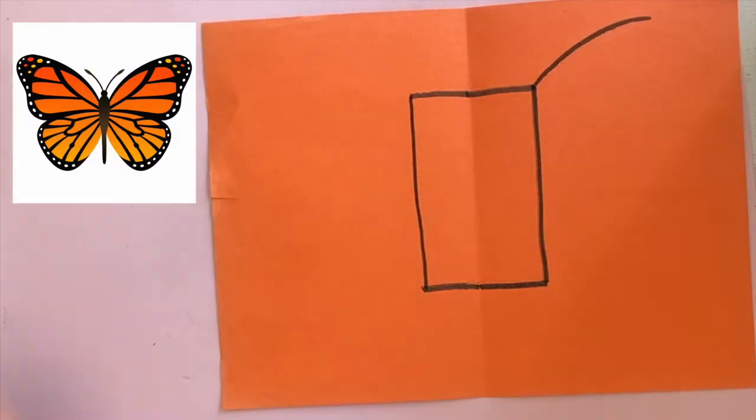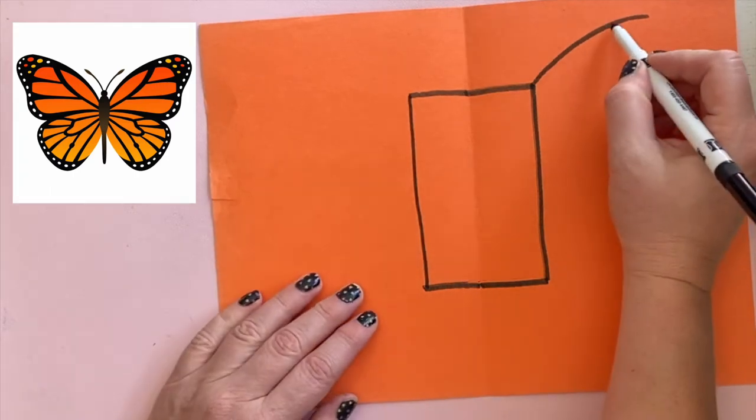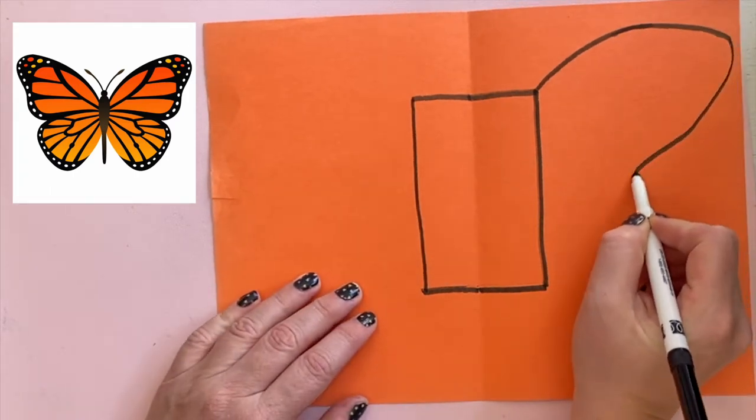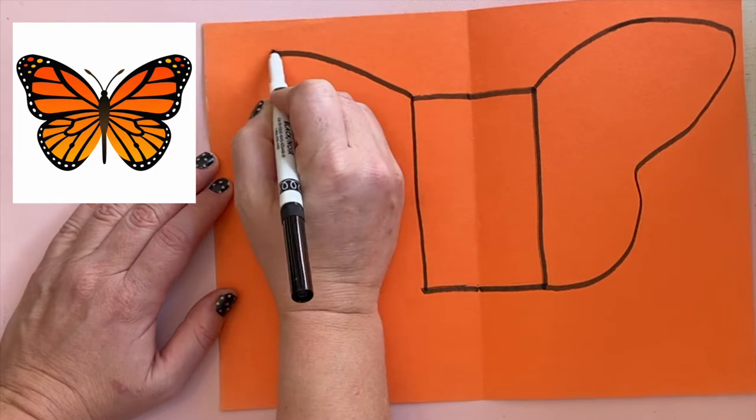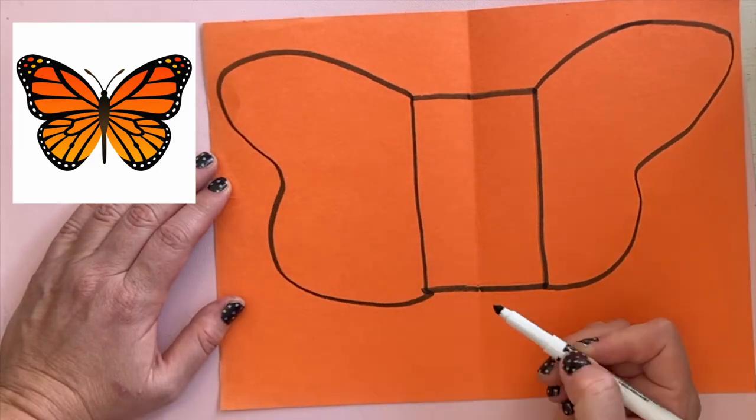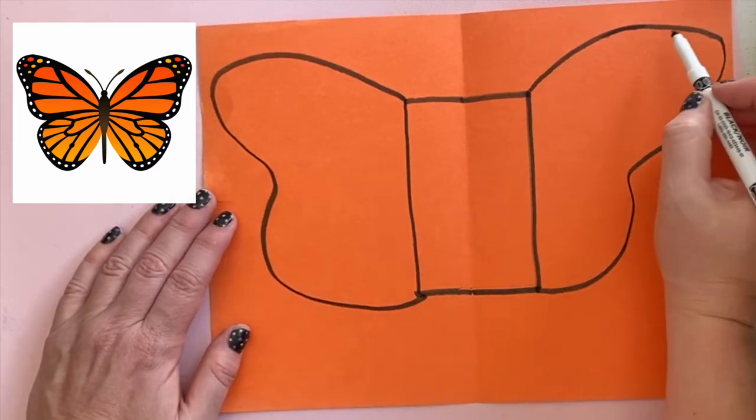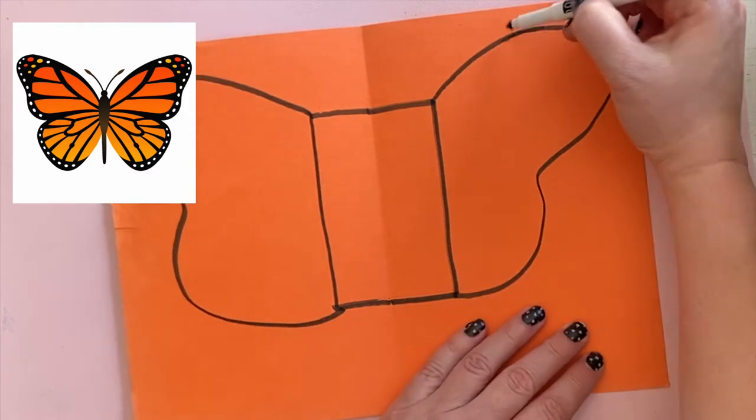We're going to draw the wings on both sides of this rectangle. Notice the patterns that the butterfly wing has. The Monarch has one big section on the top of the wings and then a smaller one near the bottom.